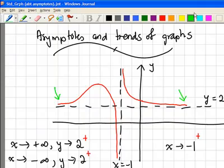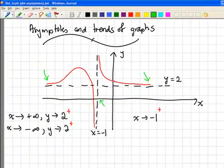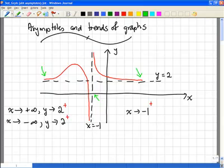Negative 1 plus, when you put a plus, you're saying that it is a number slightly to the right of negative 1. So from here we notice that when my x tends towards negative 1...